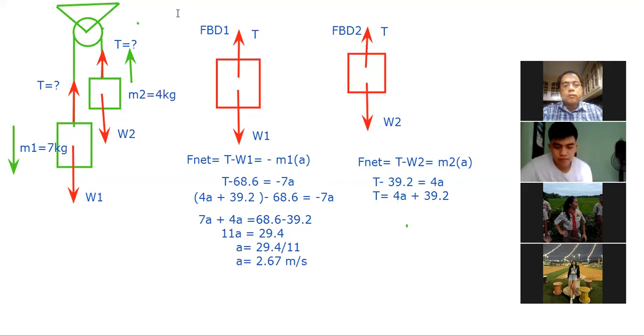Okay, so how much is our tension? So we are now set to find the tension. Our goal there is to find acceleration and tension. So what is our value for the tension? Which equation is applicable? So I think any of the two. So T, if we'll use this equation here, if we'll use this equation over there, then that's 4 times 2.67 plus 39.2, and we can get our tension.